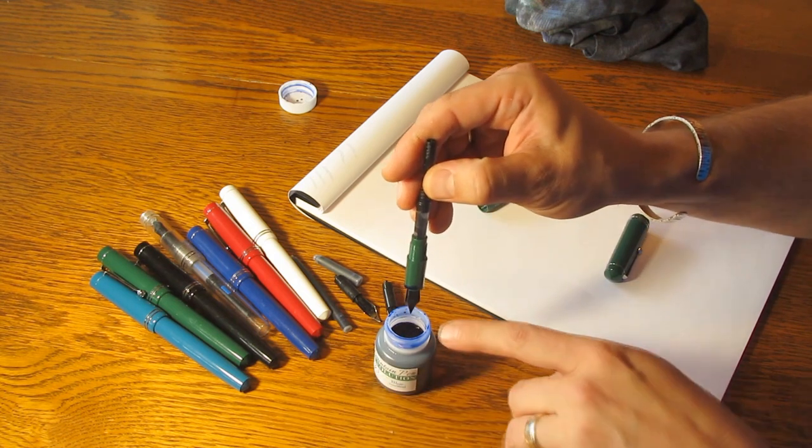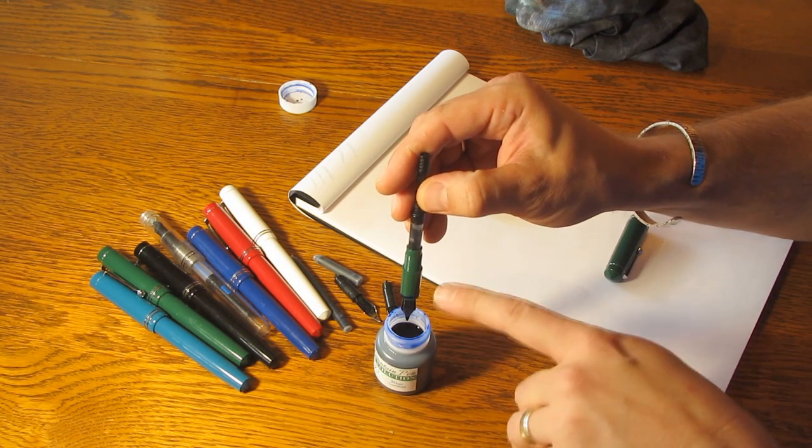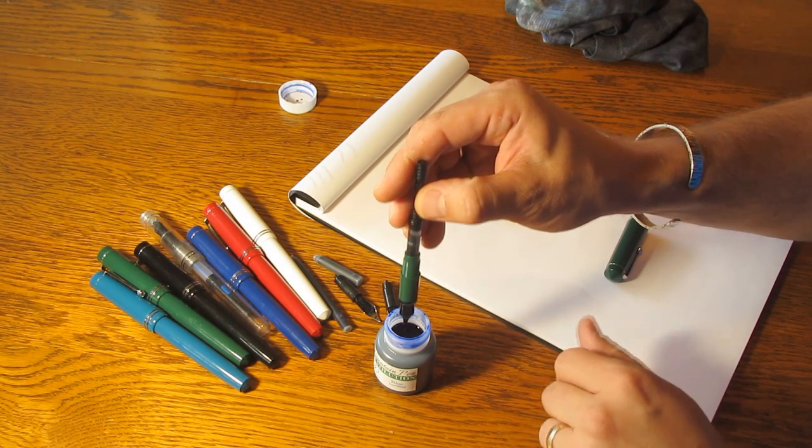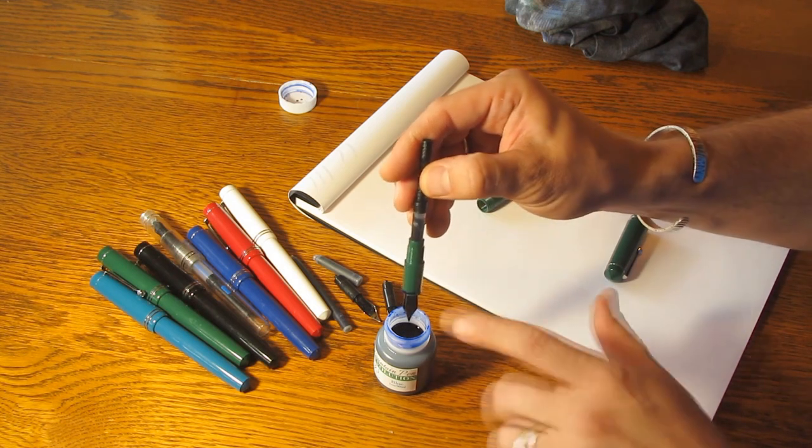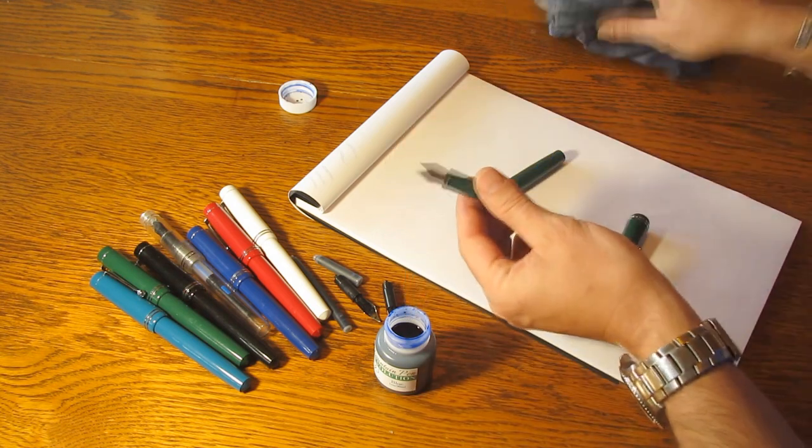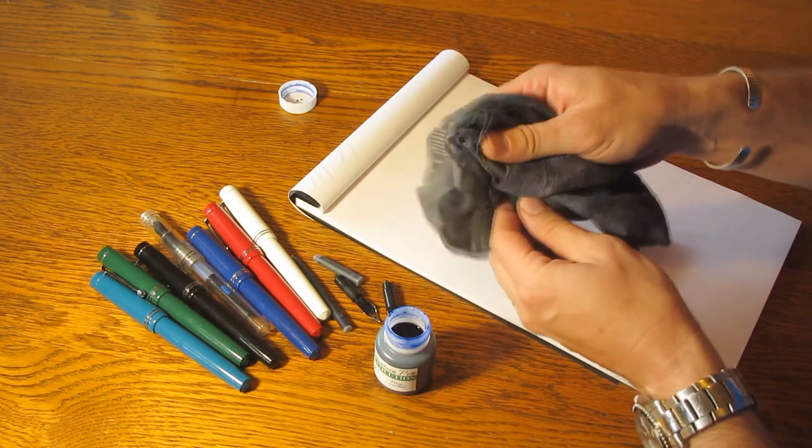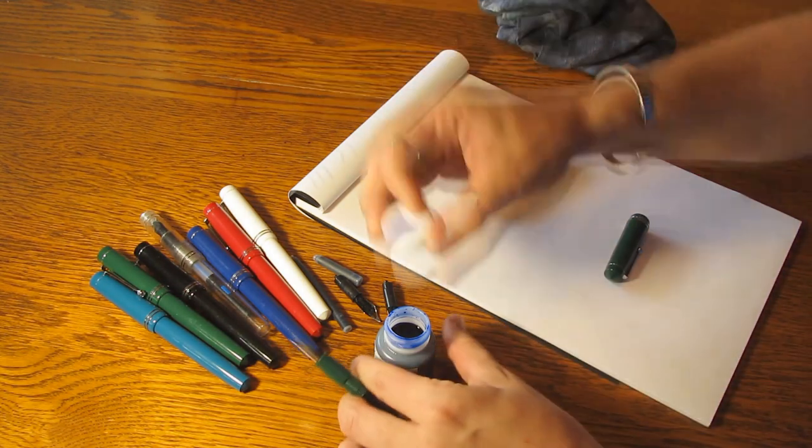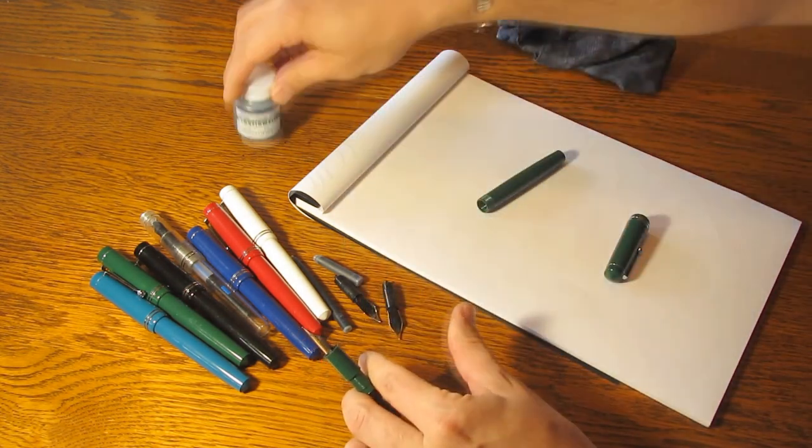When you fill your Darjeeling, you'll notice that when you pull it out of the ink, there'll be three or four or five drops of ink that will come out of the feed after you fill it. It's just an extra juicy feed that holds a lot of ink, so that excess ink will drain out in a few drops before you remove your pen and wipe it off. Let's cap this ink before there's a disaster.